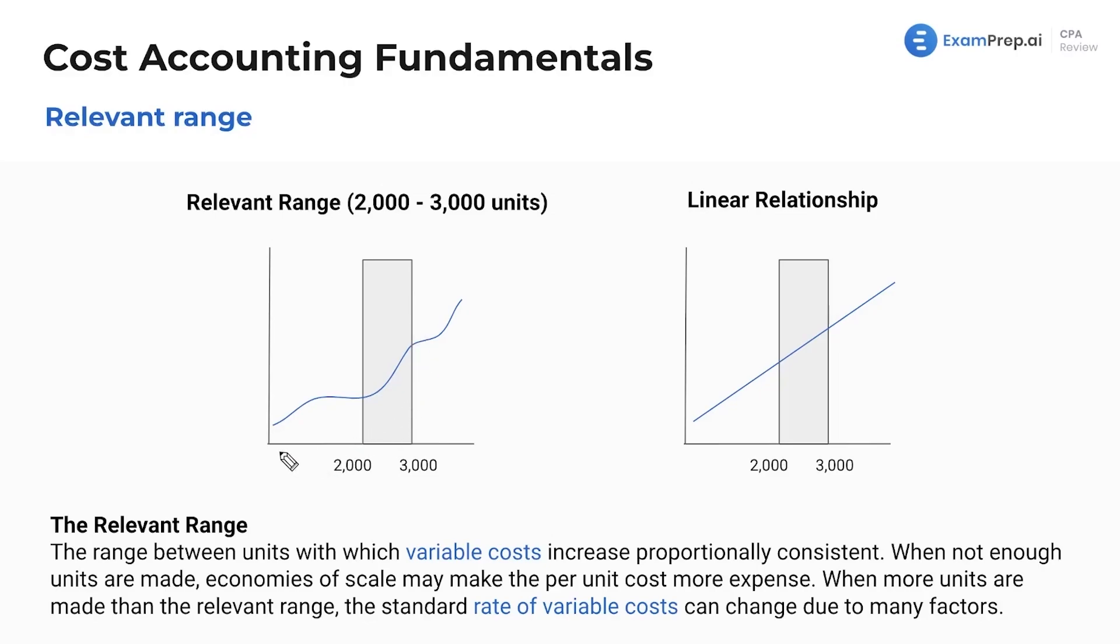Let's say from zero to 2,000 tables, our variable costs are not very consistent. They just go up and down. It depends, it totally depends.